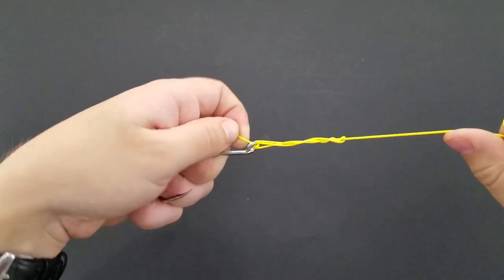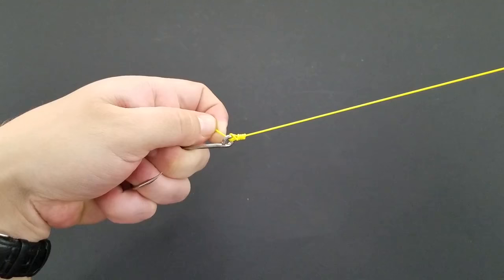Okay, now I'll hold that tag end tight. You can pull your main line and the knot will start forming for you.